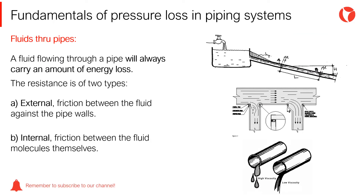A fluid flowing through a pipe will always carry an amount of energy loss, which is spent in overcoming resistance opposing the flow and eventually dissipates in the shape of heat. The resistance that a pipe must overcome is of two types: external, resulting from the friction between the fluid against the pipe walls, acceleration and direction changes, and the resulting turbulence produced inside the pipe; and internal, resulting from the friction between the fluid molecules themselves against each other — in other words, the viscosity of the fluid.